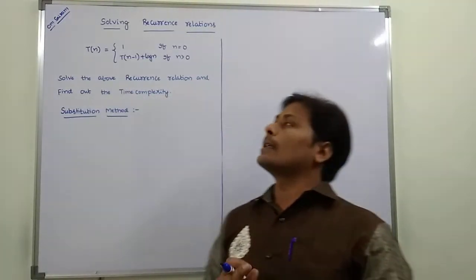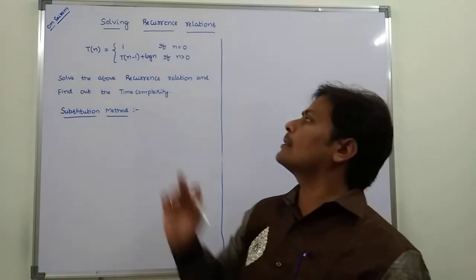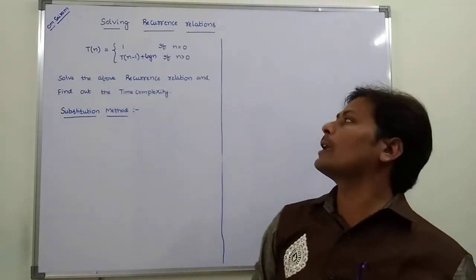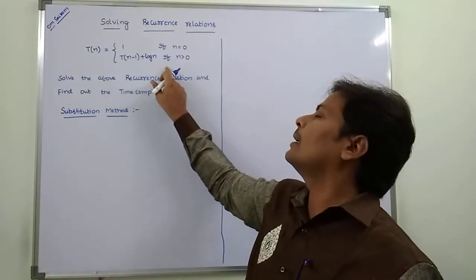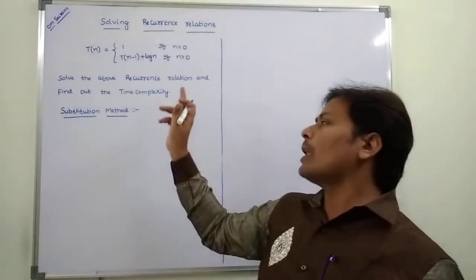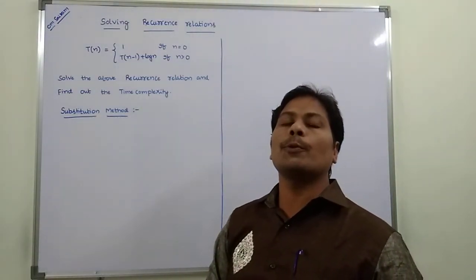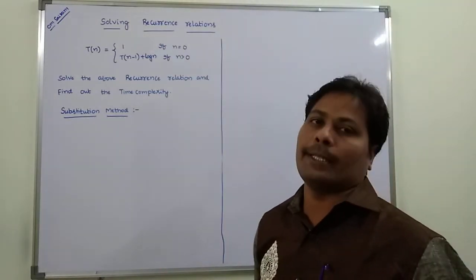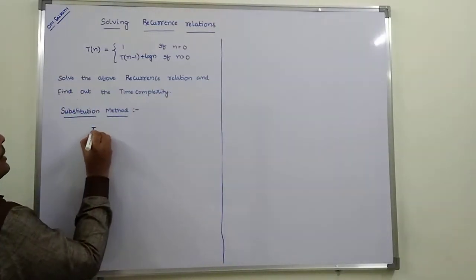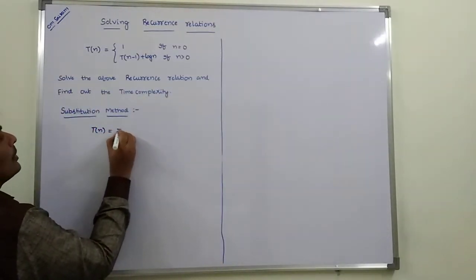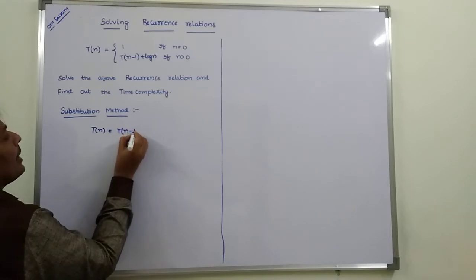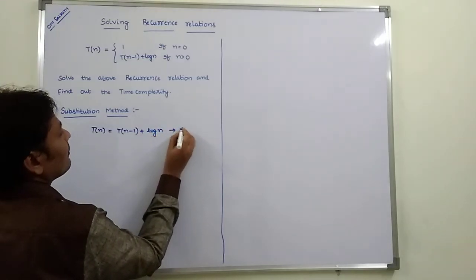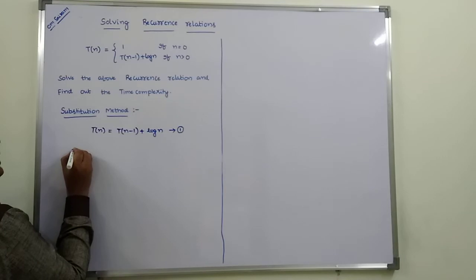Now the second example: T(n) = 1 if n = 0, and T(n) = T(n-1) + log n if n > 0. Solve the above recurrence relation by using the substitution method and find out the time complexity. T(n) = T(n-1) + log n is equation 1.